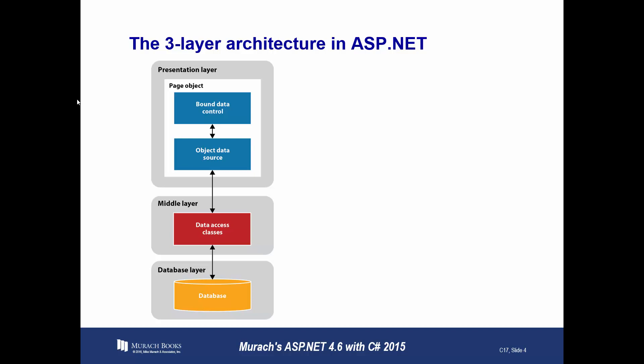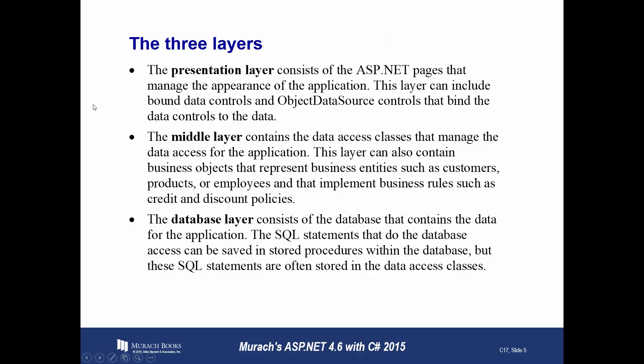This is similar in nature to what we'll see in Chapter 25 for Model-View-Controller, but it is not identical. An object data source will be used here — it will allow for data binding within this three-tier architecture. An object data source is similar to an SQL data source, but instead of directly accessing a database, it gets its data through data access classes. What's nice about that is that you're able to write code that will manipulate your database for you, making it more intuitive for the people running your application.